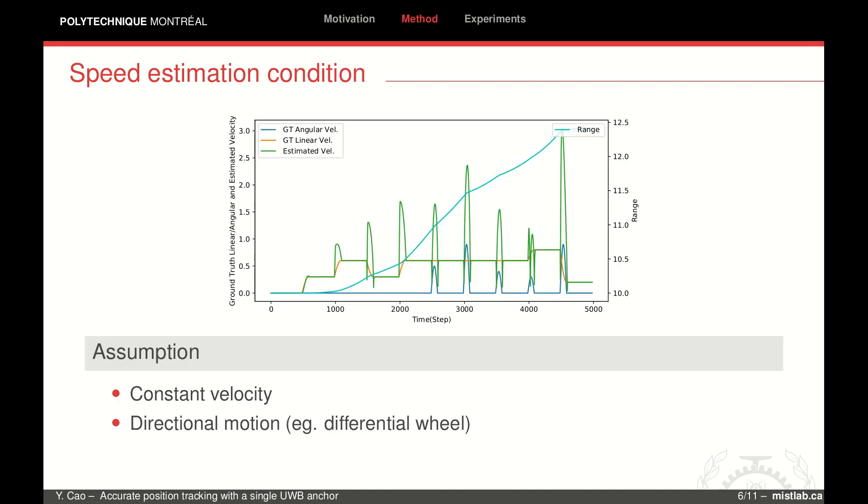We tested this speed estimation using noise-free ranging measurements to one anchor. The cyan line is the range measurement value, which is continuously fed into the speed estimator. Green is the estimated speed, which correctly tracks the true speed during constant velocity phases.